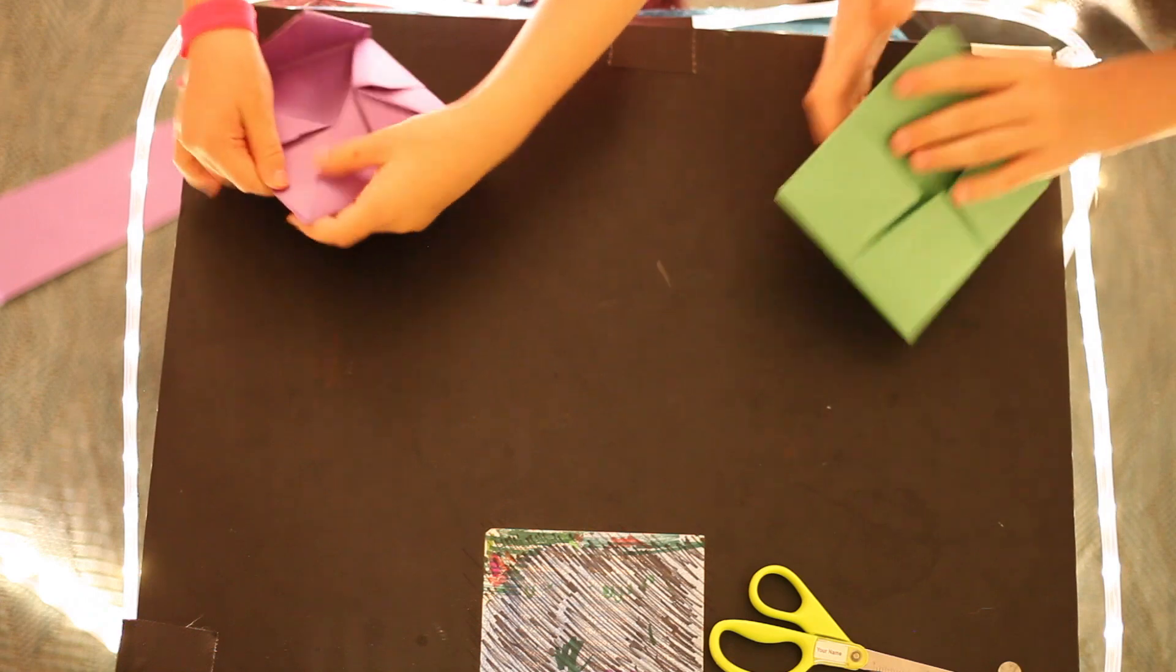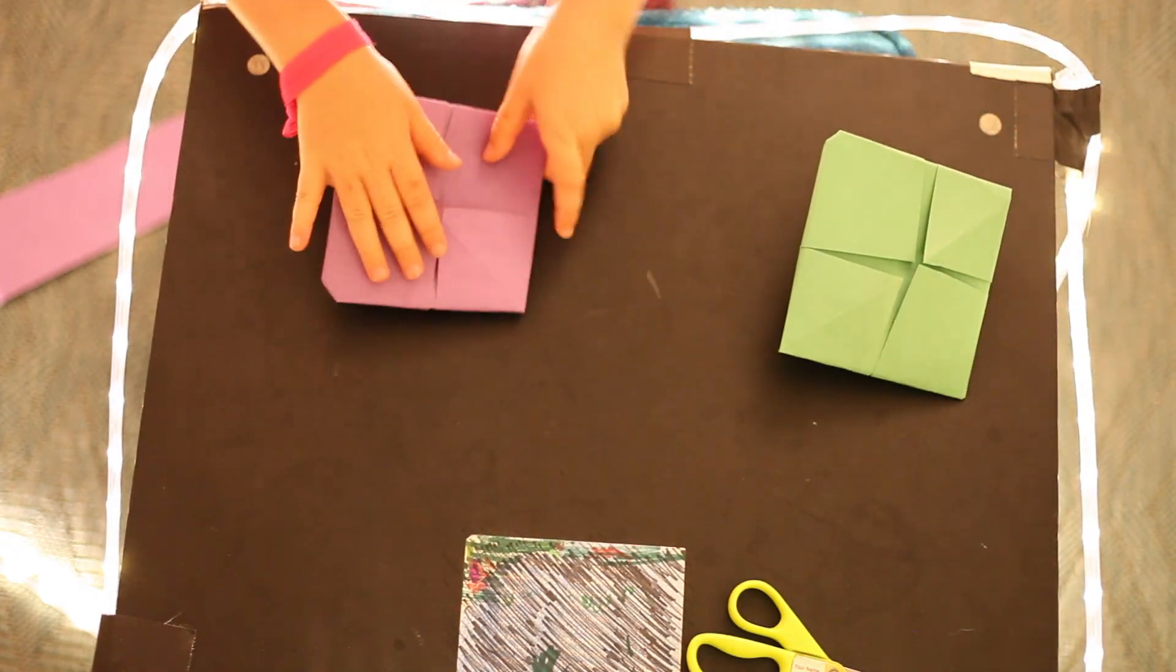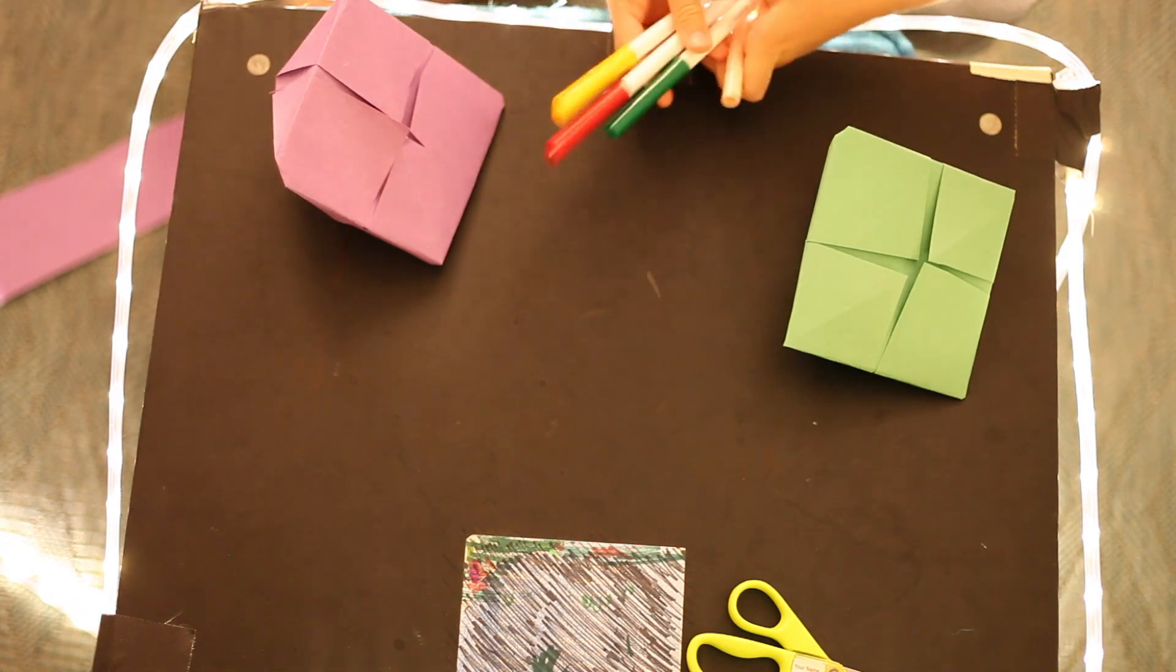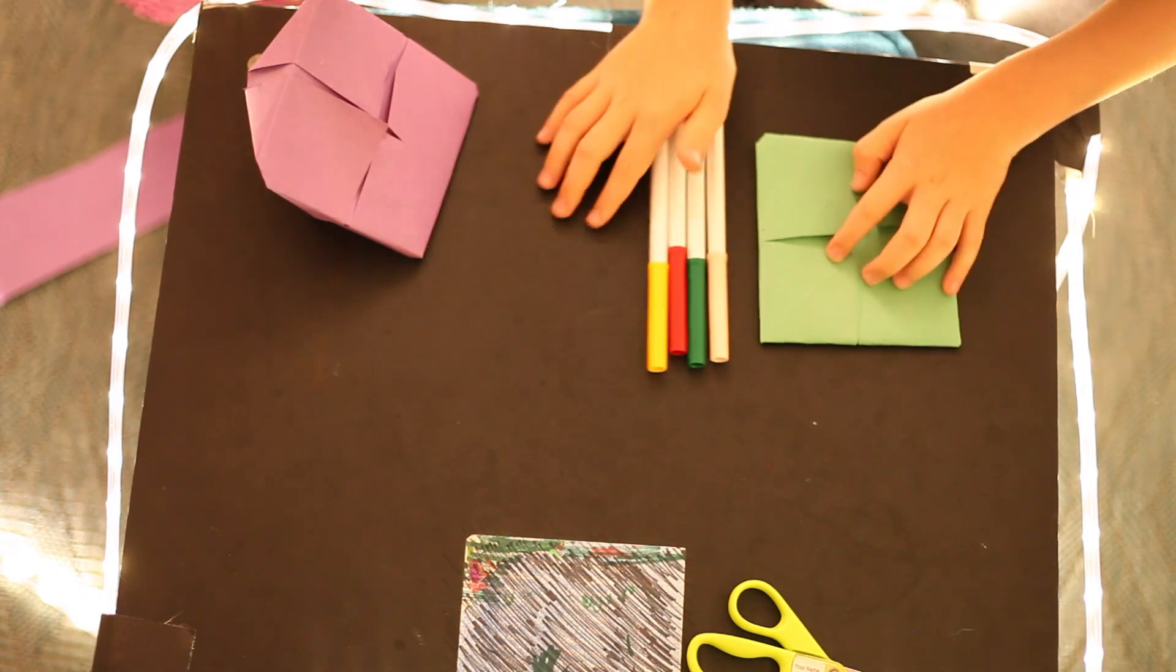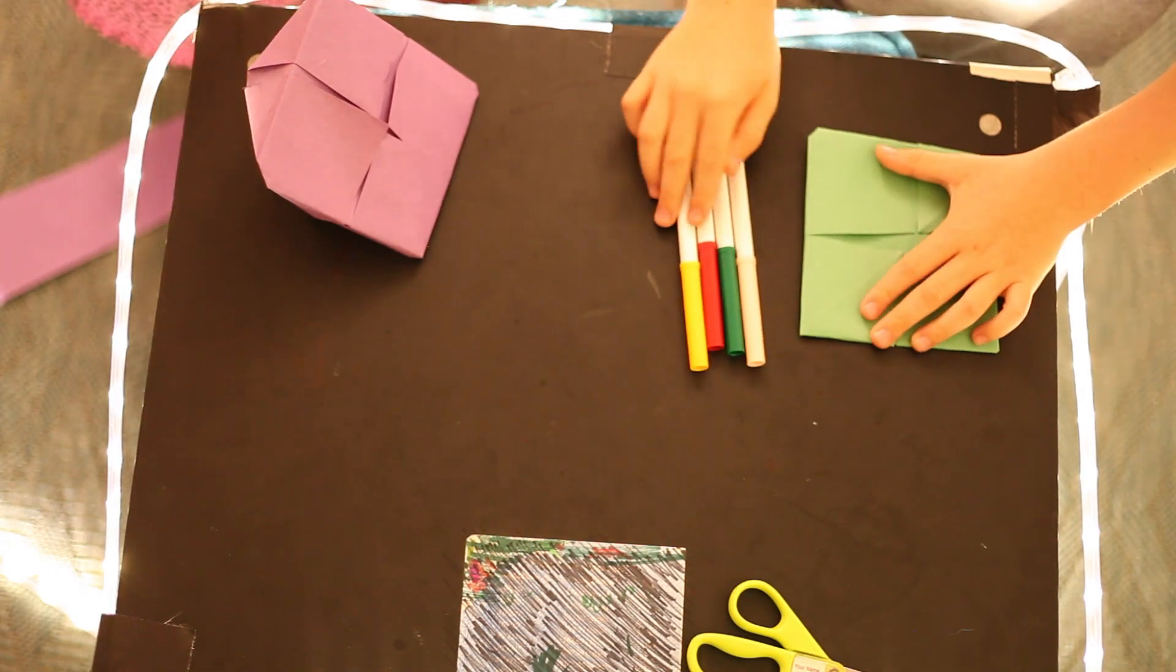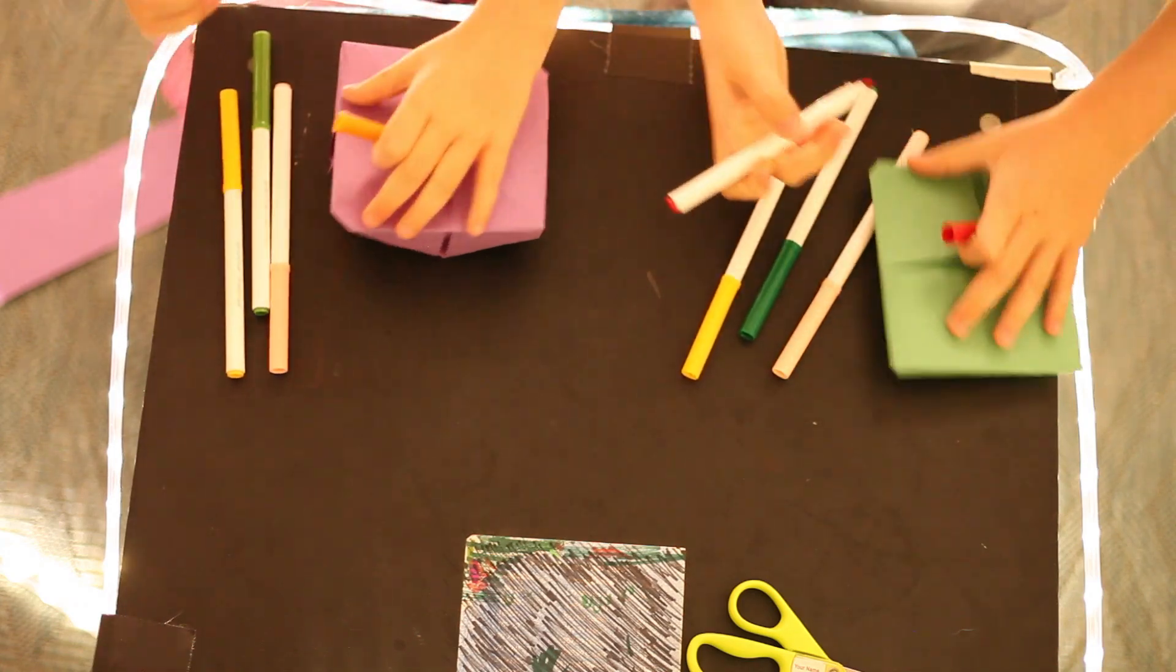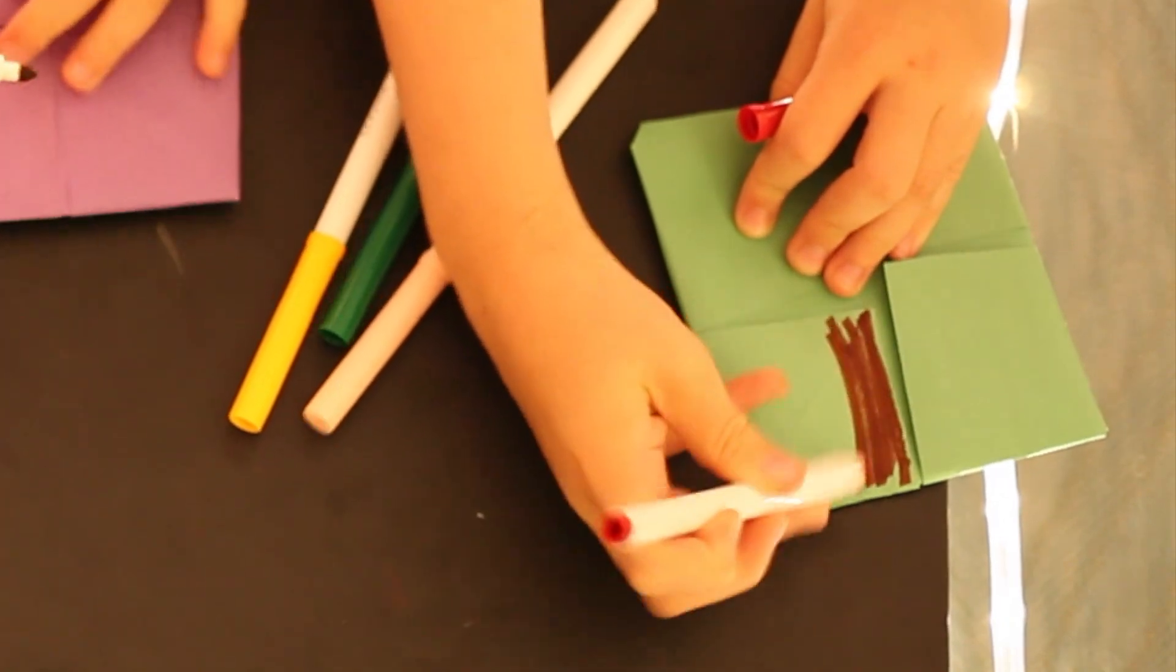Then once you've done that, you would take four different colored markers. You can choose any color you want. For this example, I will use green, pink, red, and yellow. I'm going to use pink, yellow, a brownish color, and green. Once you have your four different colors, you would color in each one of these squares with one of those different colors. I'll start with the red. I'm going to start with the brown.